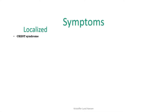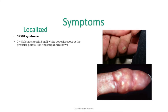Now we will go on to more specific symptoms, starting with the localized variant. A common mnemonic to remember the symptoms of systemic sclerosis is CREST. CREST symptoms plus more can be found in the diffuse variant, but CREST is best used to remember the symptoms of the localized variant. CREST stands for: first, C — calcinosis cutis. Classically, small white deposits can be seen at the pressure points, especially in the heels, elbows, and fingertips.